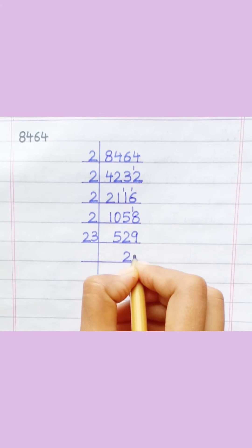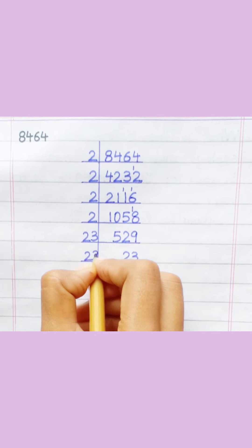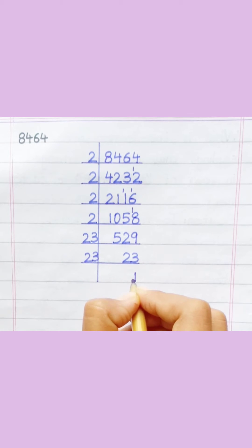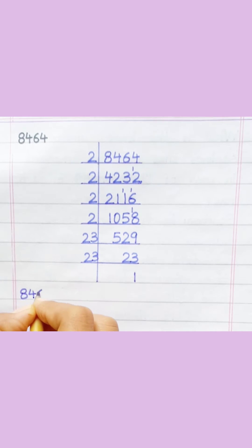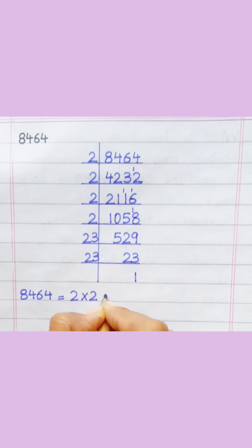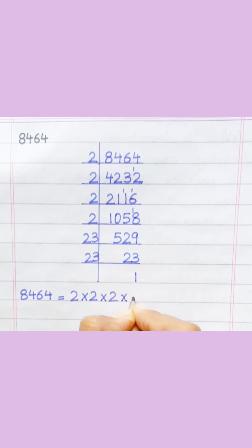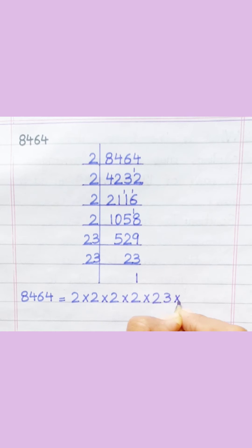Twenty-three twenty-threes are five hundred twenty-nine. Twenty-three ones are twenty-three. Eight thousand four hundred sixty-four equals two multiply two multiply two multiply two multiply twenty-three multiply twenty-three.